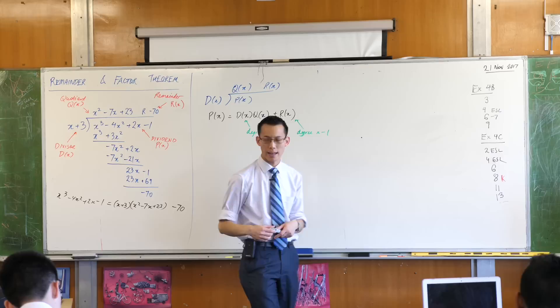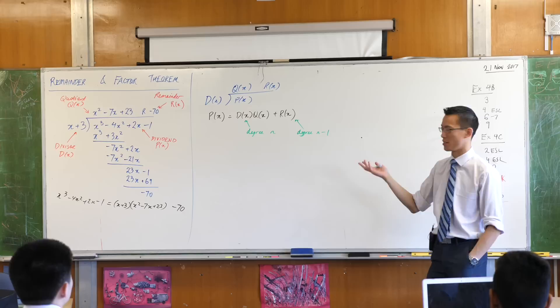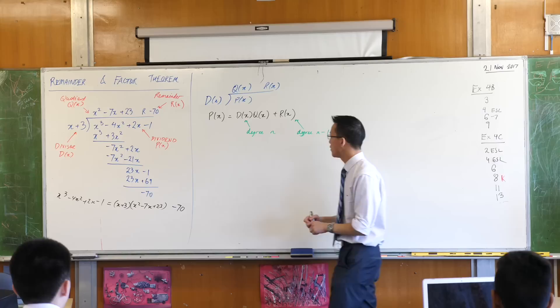So I want to look at the specific example and you'll see why we're doing this later. When we have a linear divisor, we have this a whole lot. It's very, very common. It's the most common thing we have to do. We only show you how to do quadratics and cubic divisors just because we can, but it's not that useful.